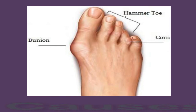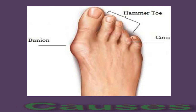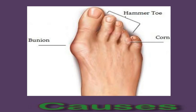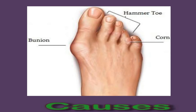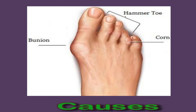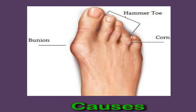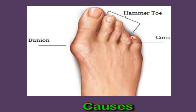Hammer toe occurs from an imbalance in the muscles surrounding the middle toe joint. These muscles, tendons, and ligaments work together to bend and straighten the toes. If one of the muscles weakens, it cannot bend or straighten the toe. If the toe stays bent long enough, the muscles tighten and the toe will not be able to straighten out.